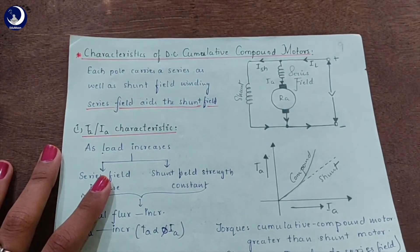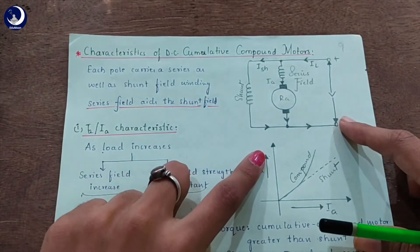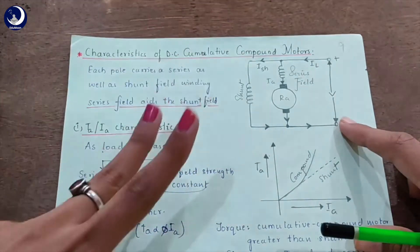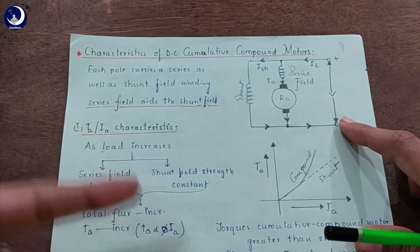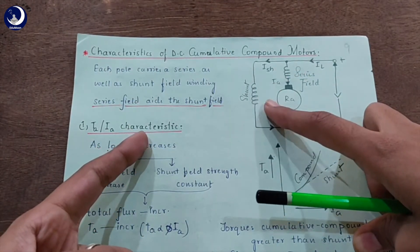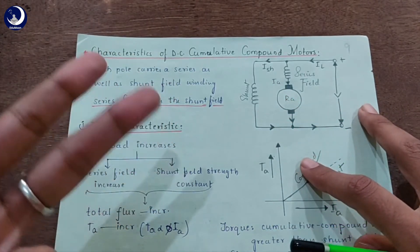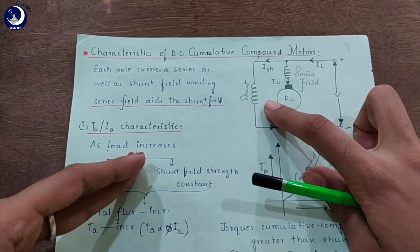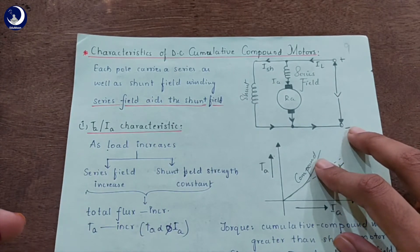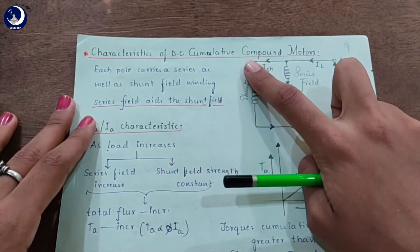A DC compound motor has both series field and shunt field. The shunt field is always stronger than the series field. DC compound motors are of two types. The first type is cumulative compound motors where the series field aids or supports the shunt field. The second type is differential compound motors where the series field opposes the shunt field, and these are rarely used due to poor torque characteristics at heavy loads. So we are going to discuss only about the cumulative compound motors.